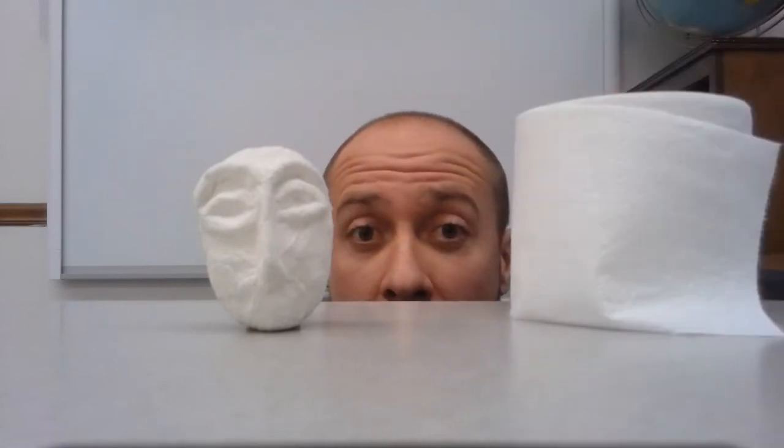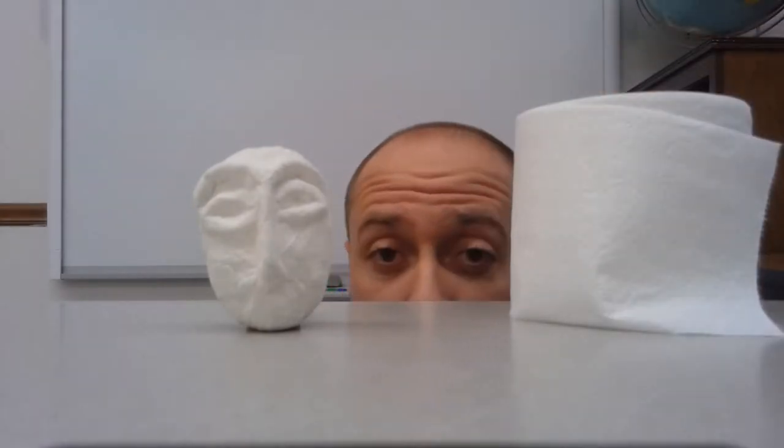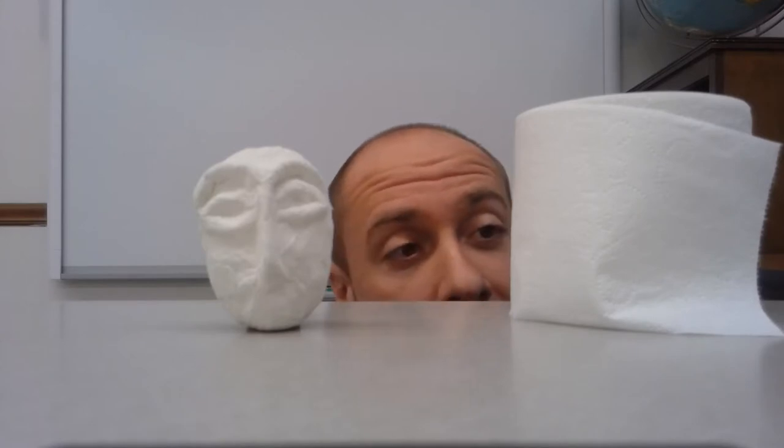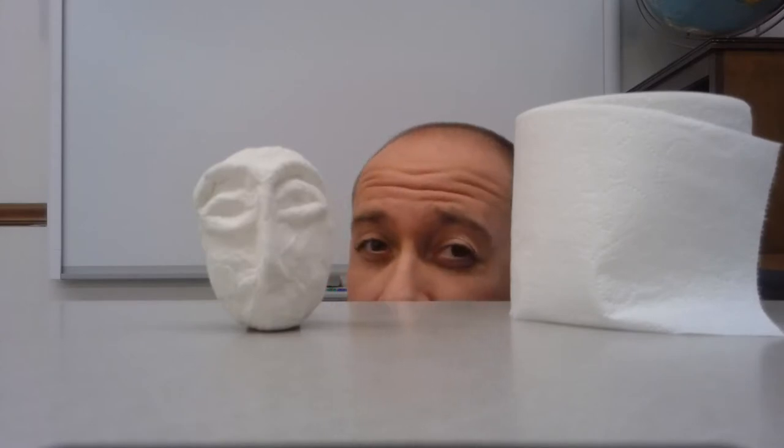First thing we're going to need is some toilet paper. That's right, we're sculpting this out of TP. The cool thing about toilet paper is that it's so thin that really you just have to get it wet to get it to stick together. It dissolves and then reweaves itself as it dries, kind of like handmade paper.